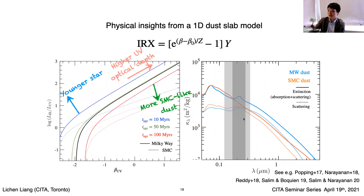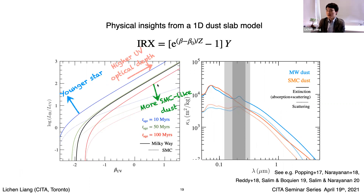When you change the dust model — for instance, replacing Milky Way dust by SMC dust — it not only shifts the solution curve horizontally, but also changes the shape of the solution, making it shallower. That's because the opacity kappa at the UV bands used to measure beta has a different shape when you change the dust model.